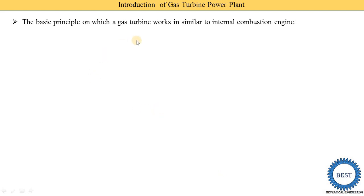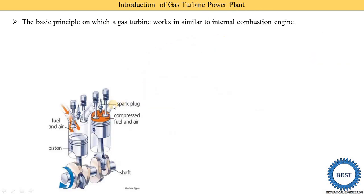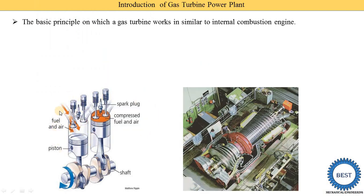The basic principle on which the gas turbine works is similar to an internal combustion engine — the working principles of gas turbines and IC engines are the same. In an IC engine, using a cylinder-piston arrangement, all processes — suction, compression, combustion, and exhaust — occur inside the cylinder. But in a gas turbine power plant, there is a separate compressor, combustion section, and turbine, all installed on the same shaft.